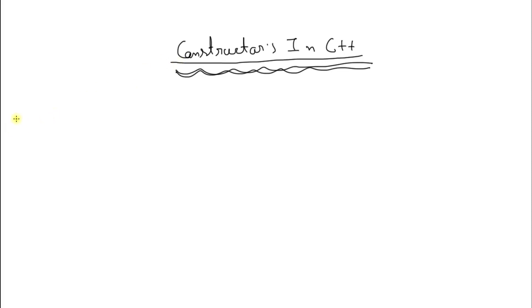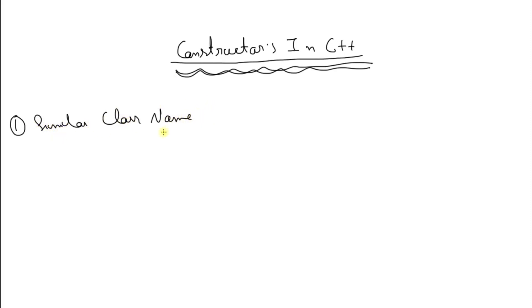The first point is that a constructor is a function and its name is the same as its class name. So whatever the class name is, the constructor's name will be the same. The second point is that constructors get called automatically when you create any object of that class.